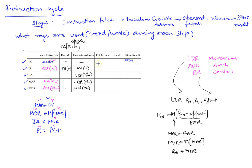Actually, let me clarify: during evaluate address for LDR, only the address computation happens — we write to the EAR. The actual memory transfer happens during operand fetch. During operand fetch, we copy what is in the EAR into the MAR, so LDR does a read and write to the MAR. It also involves the MDR, so LDR does a read and write to the MDR here as well, because that's the fetch from memory.